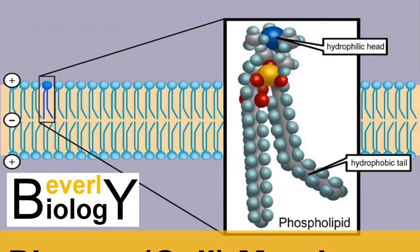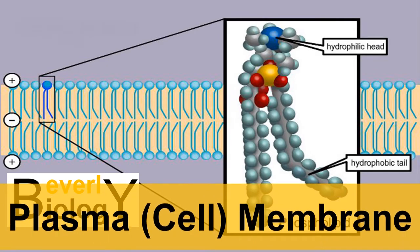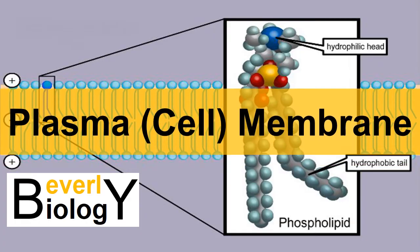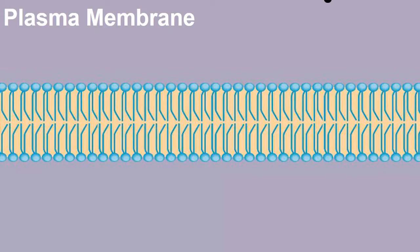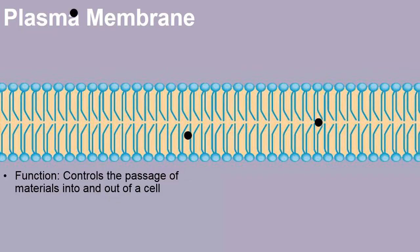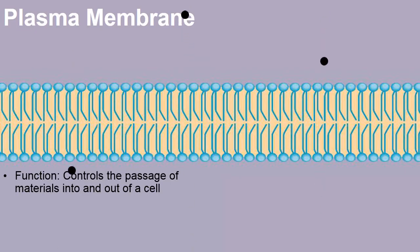In this video we're going to discuss the cell membrane, or the plasma membrane — the outer boundary of our cells. The job of the cell membrane is to control the passage of materials into and out of a cell, and that's what we're going to be discussing today: what is controlled, and also what is the cell membrane itself made from?